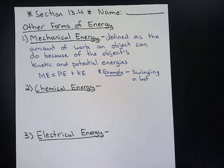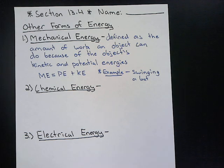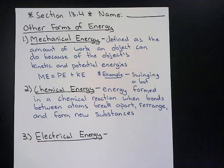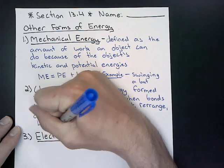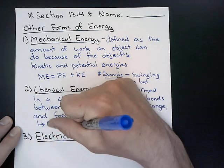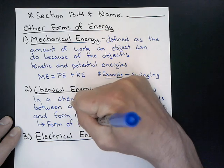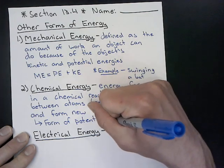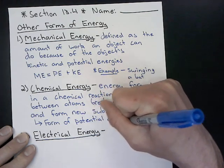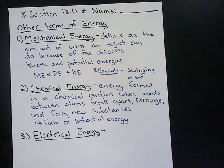Moving on to chemical energy — chemical energy is the energy formed in a chemical reaction when bonds between atoms break apart, rearrange, and form new substances. Chemical energy is just another specific form of potential energy, and it's all because of those chemical bonds, whether covalent or ionic, involved in those particular chemicals.